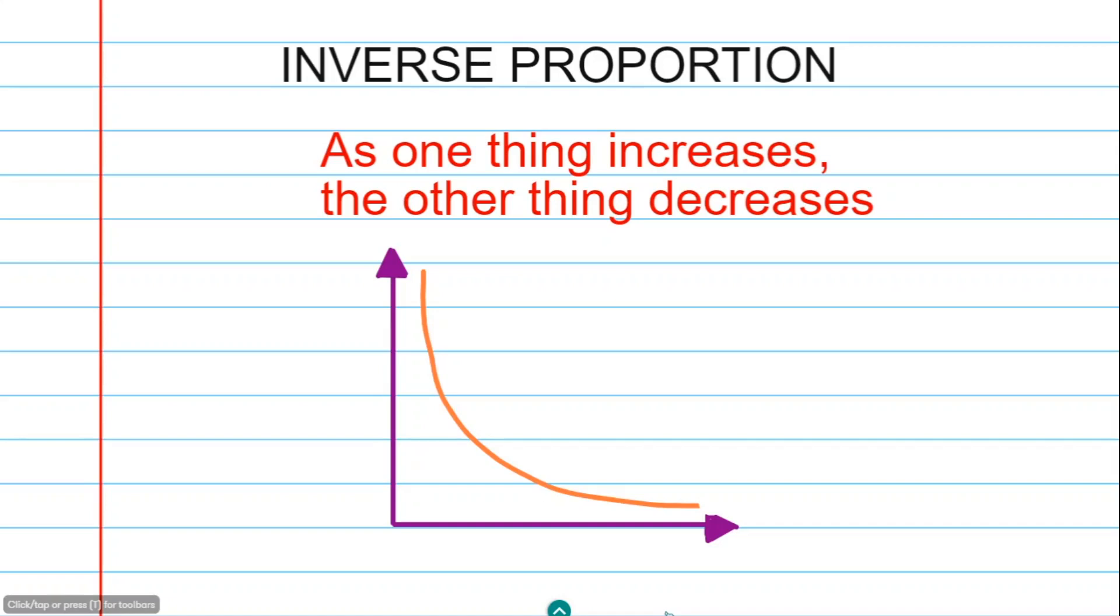If two quantities are inversely proportioned to one another, then as one thing increases, the other thing decreases. A typical graph would look like this.